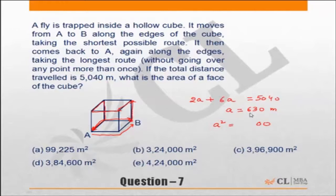63 squared is 3969, so 396,900 square meters. The answer option will be C.